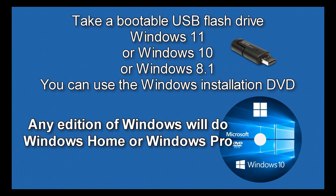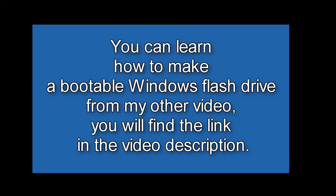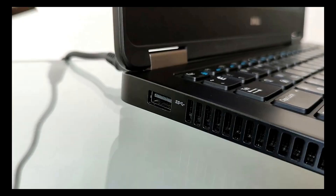Now the last fourth way to enter the system recovery menu. To do it you will need a bootable USB flash drive with Windows 10 or Windows 11, or a bootable DVD disk. Any version of Windows — home or pro — will work to enter the system recovery menu. If you do not have such a flash drive or DVD, perhaps a relative or friend has one, or you can make one yourself on another computer. Making a bootable flash drive is simple and free; you can learn how from my other video — the link is in the video description.